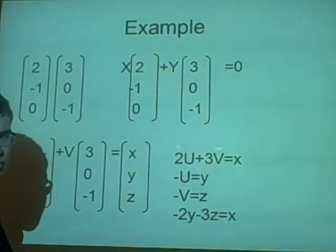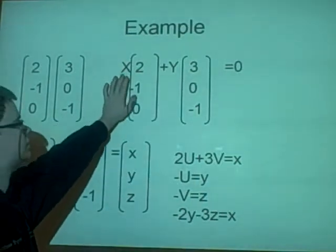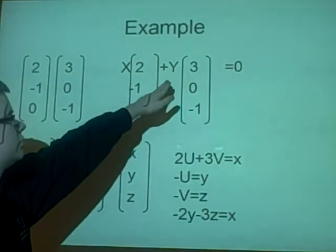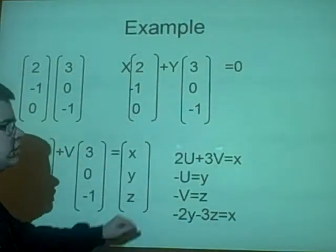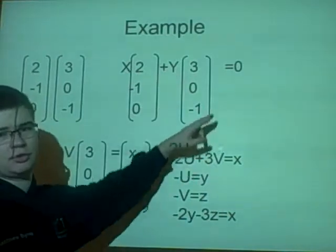First, we need to check that it's linearly independent. We have a scalar times it plus another times it. If it's linearly independent, then x and y will be 0 for the result to be 0.